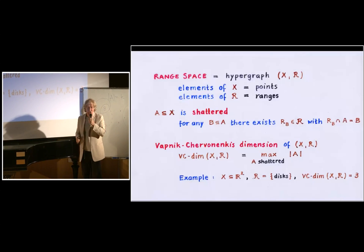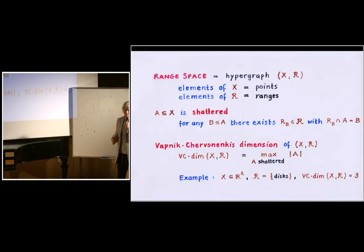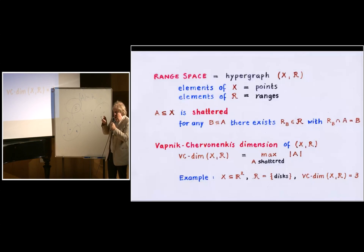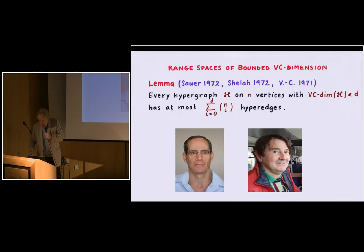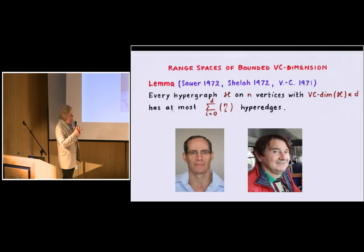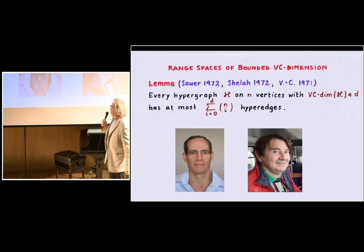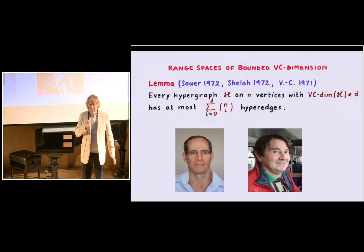And you would say that a range, a hyperedge, is whatever you can cut off by a disk. So the intersection of any disk with this point set is a hyperedge. And it's very easy to see that this hypergraph has VC dimension three. You cannot have four points that are shattered. For instance, if these four points are in this position, then they cannot form a shattered set, because you will never be able to find a disk whose intersection with this set consists of exactly these three points without containing the middle points.